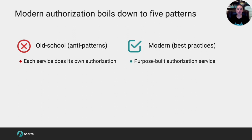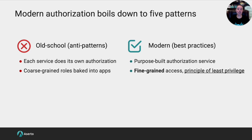The modern way of doing things is building a purpose-built authorization service that you can extend across a bunch of your different services and applications. The large technology vendors can afford to build their own custom one; the rest of us need to build on top of open source or buy a technology solution. The second anti-pattern is to use coarse-grained roles, leading to over-provisioning of permissions or role explosion. The modern antidote is to practice some form of fine-grained access control — ABAC, ReBAC — adhering to the principle of least privilege.